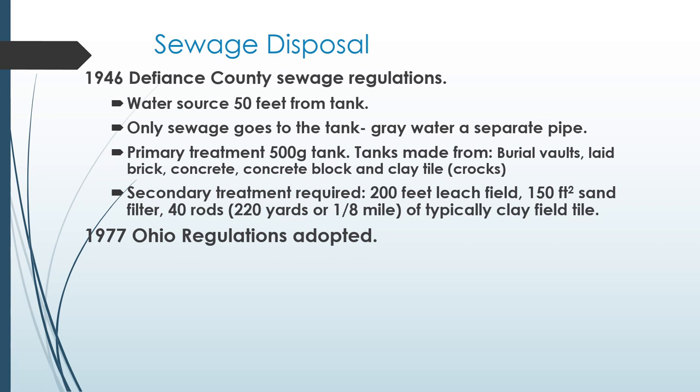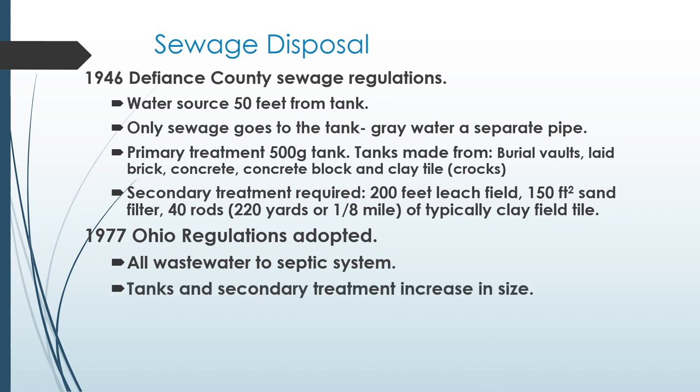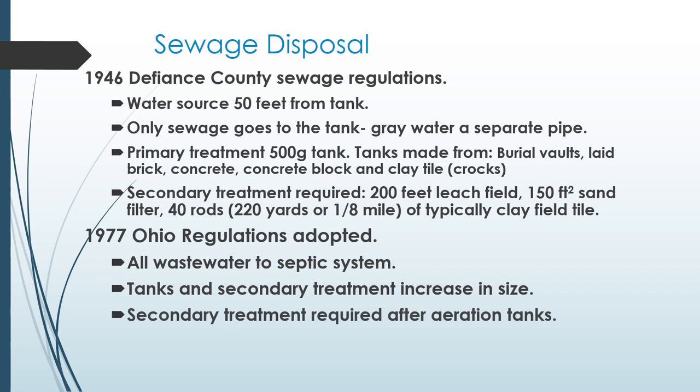In 1977, Ohio regulations were adopted and all wastewater was to go to the septic system. Tanks and secondary treatment areas increased in size correspondingly. Also in the 1960s, aeration tanks began being installed in Defiance County, which allowed the creation of small lots because they don't take up more space than a septic tank.